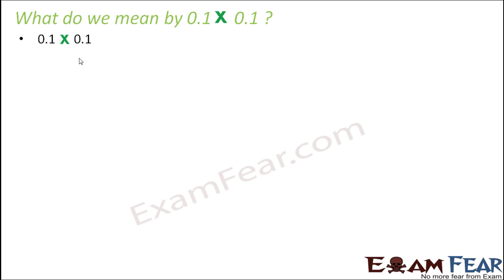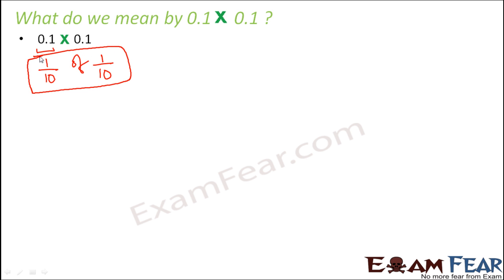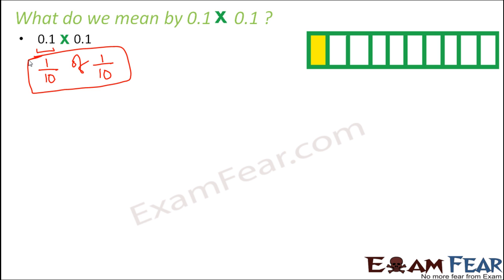The meaning is pretty simple. 0.1 is nothing but 1 by 10. So 0.1 multiplied by 0.1 means 1 by 10 of 1 by 10. Now what is 1 by 10? It is one tenth of anything. If you have a train with 10 compartments, then 1 compartment out of those 10 compartments is one tenth. So when you look at this image, you have 10 compartments.